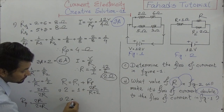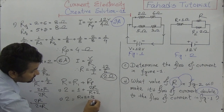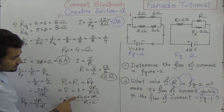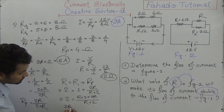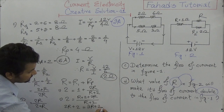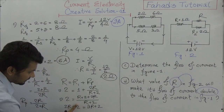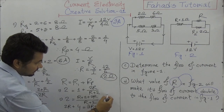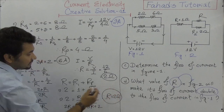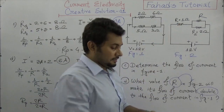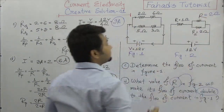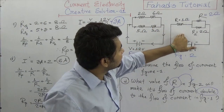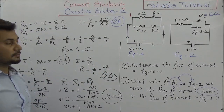From this equation we can find R. Two times (R plus two) equals one times (R plus two) plus two R, giving two R plus four equals three R plus two. Solving: three R minus two R equals four minus two, so R equals two ohms. If the value of R is two ohms, then the current in figure two will be double that of figure one.